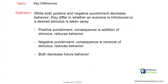Some key differences: while both positive and negative punishment decrease behavior, they differ in whether an aversive is introduced or a desired stimulus is taken away. In many situations, an aversive is introduced in positive punishment, or something desired is taken away with negative punishment. Positive punishment: consequence is the addition of a stimulus, reducing behavior. Negative punishment: consequence is the removal of a stimulus, reducing behavior. Both decrease future behavior.